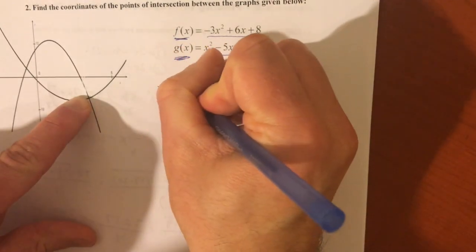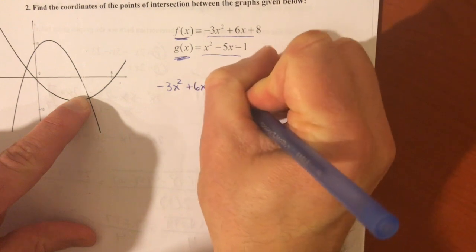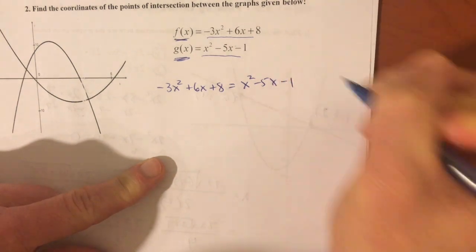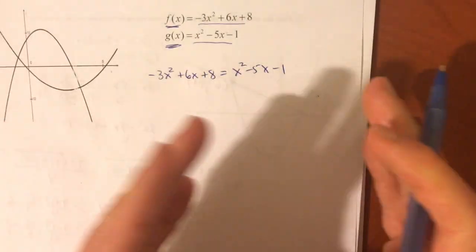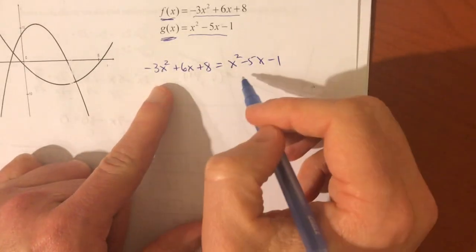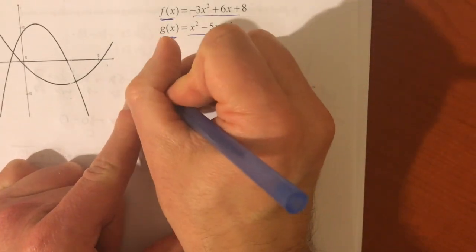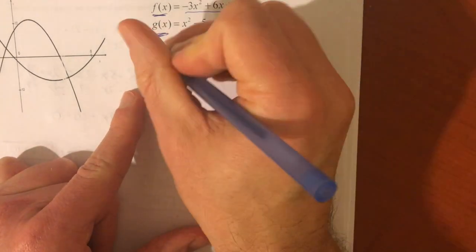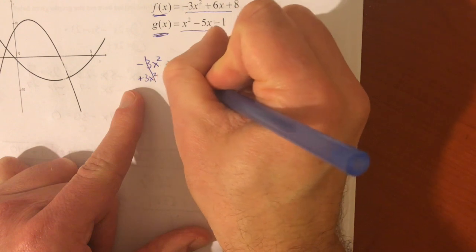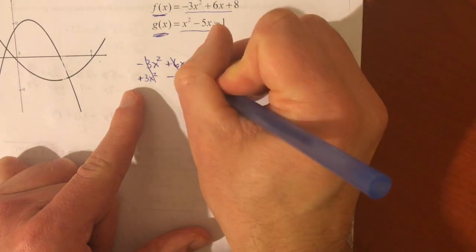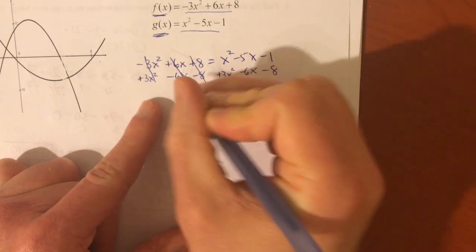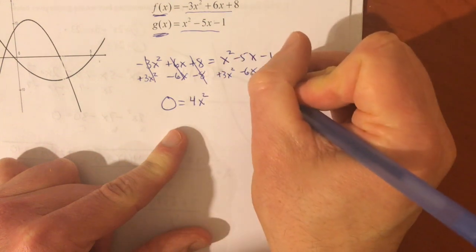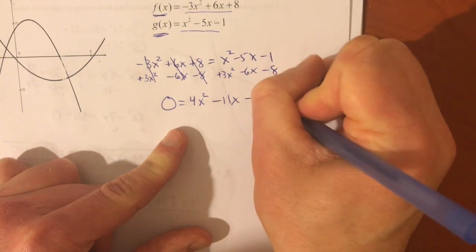So, when does negative 3x squared plus 6x plus 8 equal this other equation of x squared minus 5x minus 1? Get all of your stuff on one side. Make it equal to 0. It doesn't matter which side you like to bring it to. I'm going to bring everything to the right side here. I'm going to add 3x squared. I'm going to subtract 6x. I'm going to subtract 8.